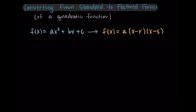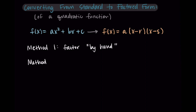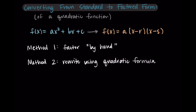There are two methods we're going to talk through here. The first method is to factor by hand — just looking at it and seeing how it could be factored. The other method is to rewrite it in factored form using the quadratic formula, which we'll go over as the second method.